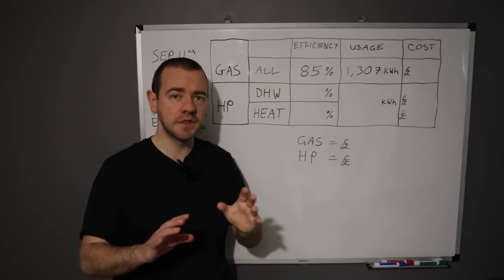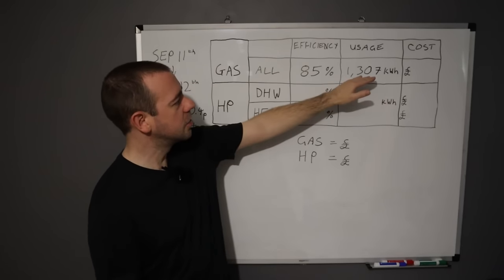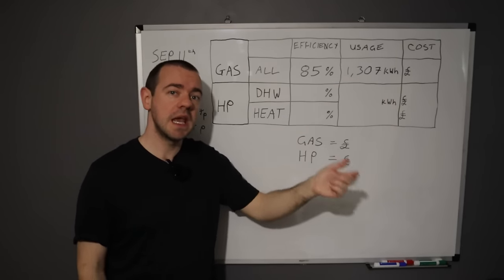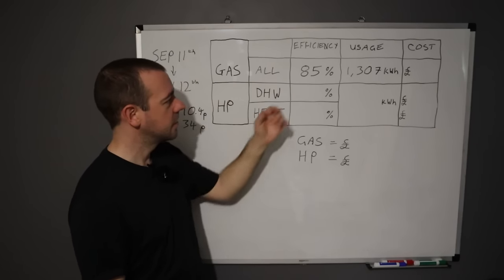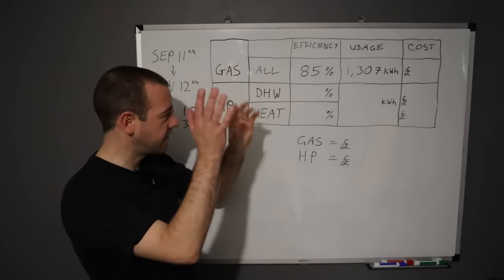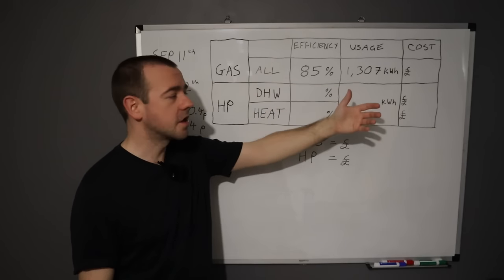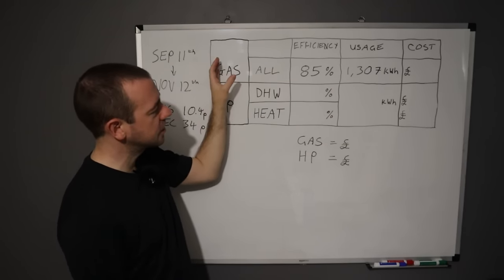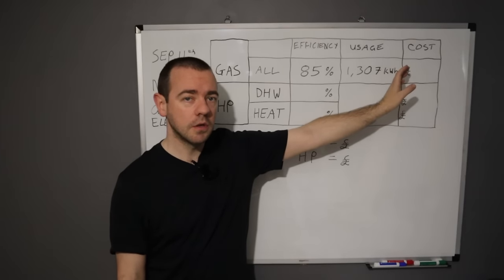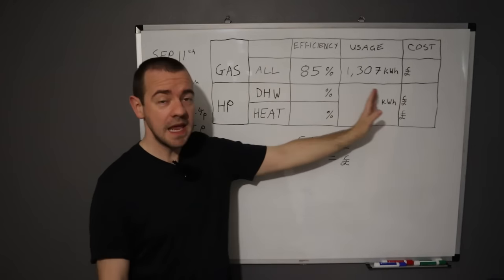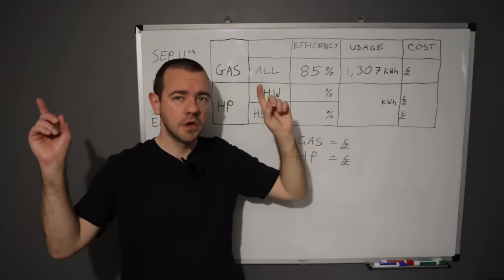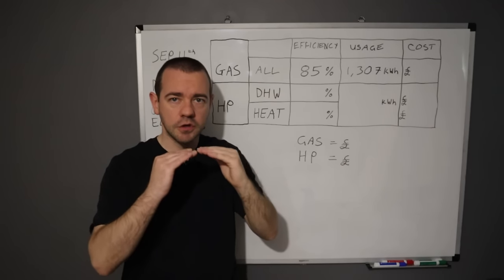I've also got the heat geeks to do their maths and clever stuff to adjust this figure because this year is warmer than last year. So they've looked at the average temperatures and that has been adjusted accordingly. This should be essentially how much the gas boiler would have used compared to the heat pump in the same house over the same time period.